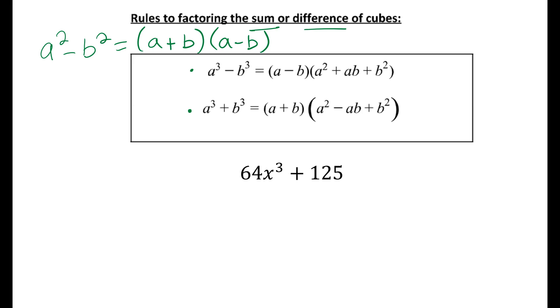Notice that for the sum of cubes, it's a very similar formula. The only thing that changes are those first two signs. When it's a difference of cubes, the first sign is always the same and the second sign is always opposite. For addition, the same rule holds true. The first sign is addition and the second sign is subtraction.